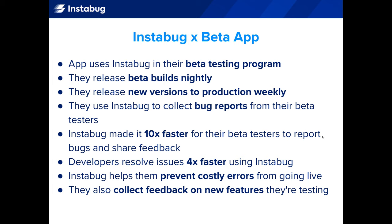Before Instabug, when a beta tester wanted to report a bug, they'd have to take a screenshot, log into Facebook, go to their beta testing Facebook group, upload that screenshot, explain the problem, and then wait for someone to reach out. Then they'd go back and forth to find out details like device, the steps leading up to the bug, network connection, etc. Instabug revolutionized this entire process, making it easier for testers to report bugs. They received more feedback, along with Instabug's comprehensive background data, which made it faster for developers to identify the problem and fix it. And by using Instabug in their beta program, this app is also able to collect feedback on new features they're testing in their beta builds.